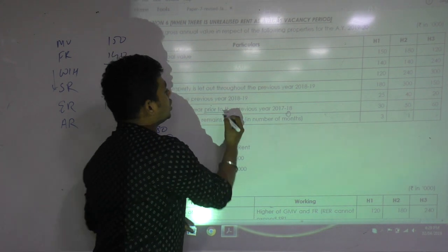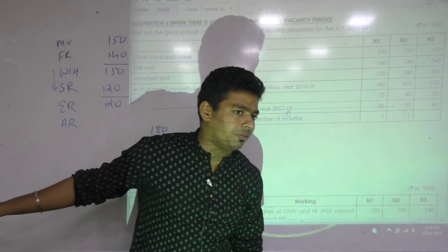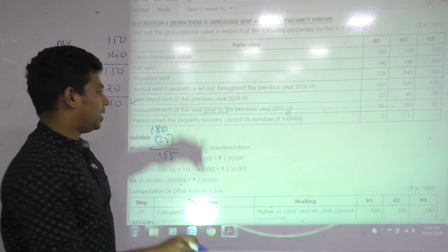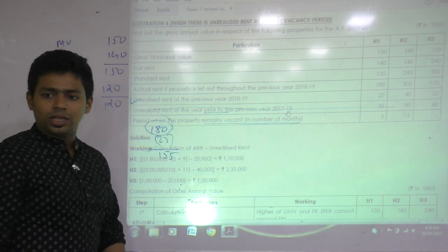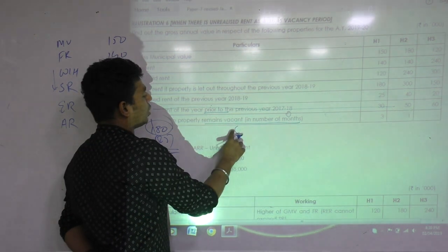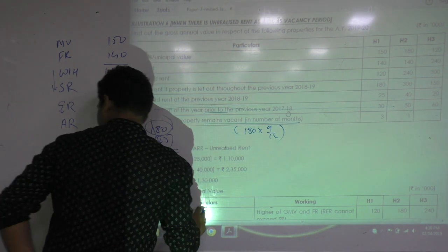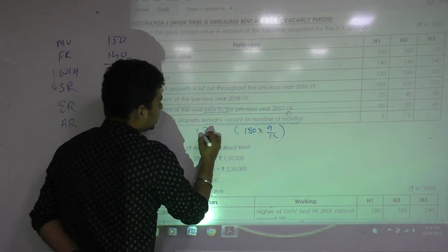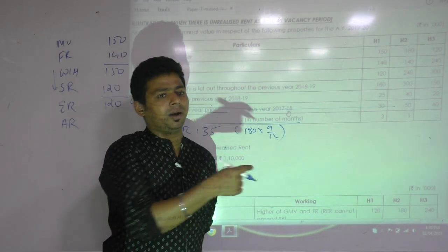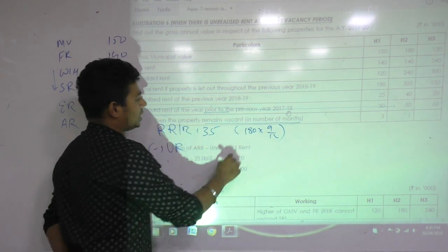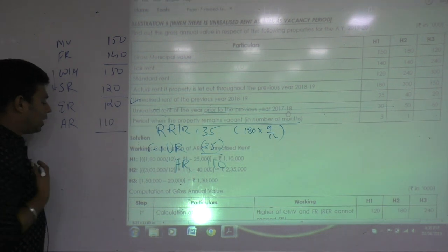AOC will not give you deduction of last 2 years in the current year. If property is let out throughout the previous year, complete 12 months, actual rent is 180. Unrealized rent during the previous year is 25, so minus 25: 155. They have given one more unrealized rent prior to previous year 17-18 - this was additional data to confuse you. We are computing for previous year, so that data is ignored. Property remained vacant for 3 months.